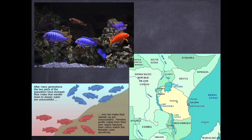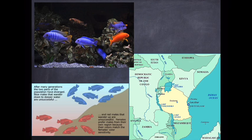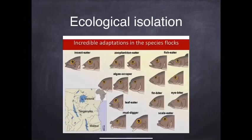When a male of either group moves into the wrong depth region, the female is unlikely to choose that one as a partner. So when blue males move deeper or red males move toward the surface, females of the opposite colour are unlikely to be attracted to them. For reference, Lake Victoria, Lake Tanganyika, and Lake Malawi are located on the eastern coast of Africa.